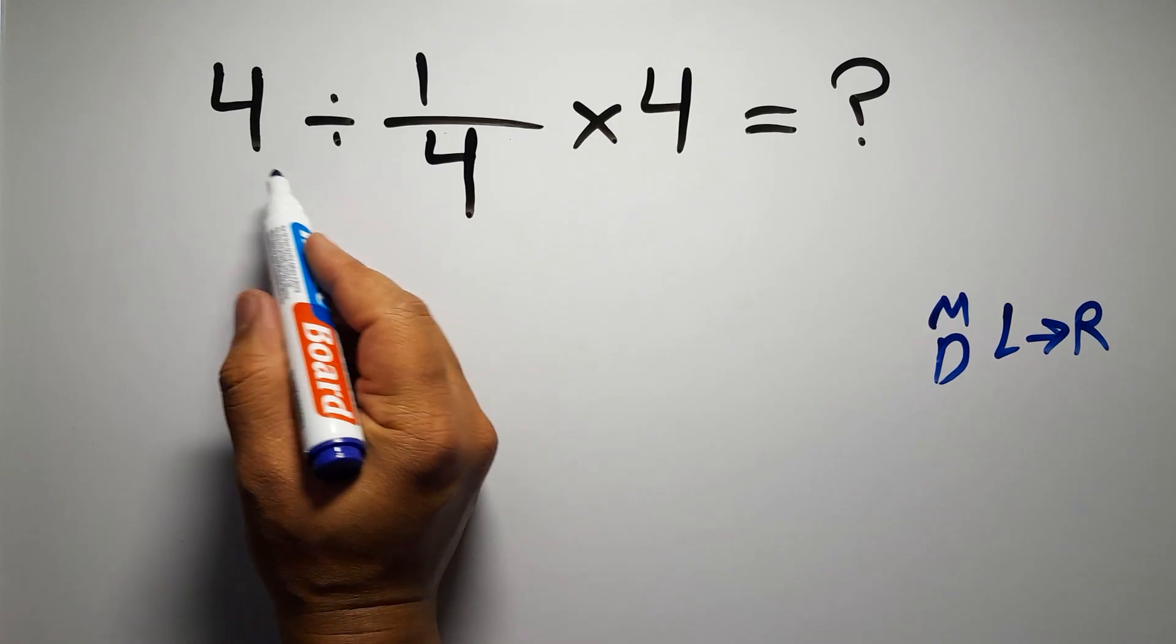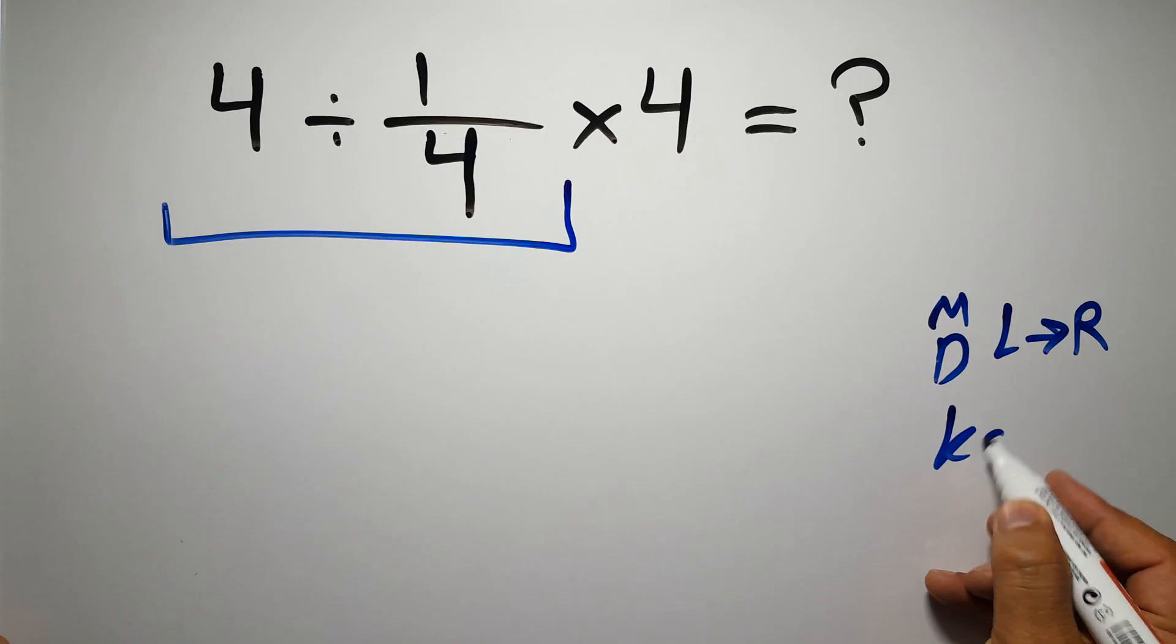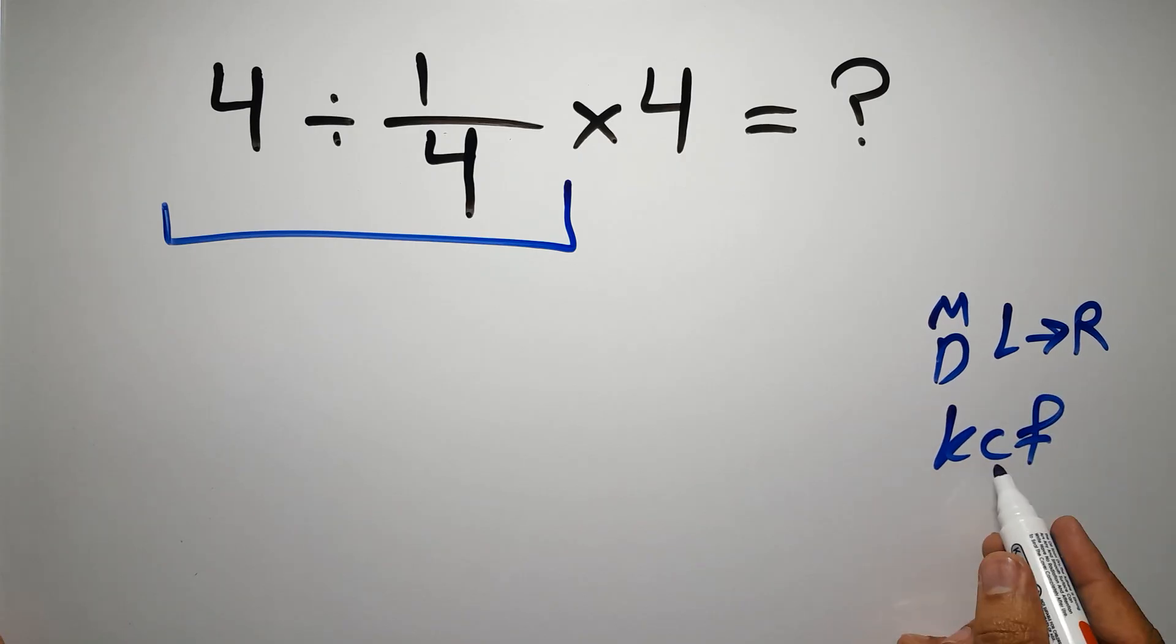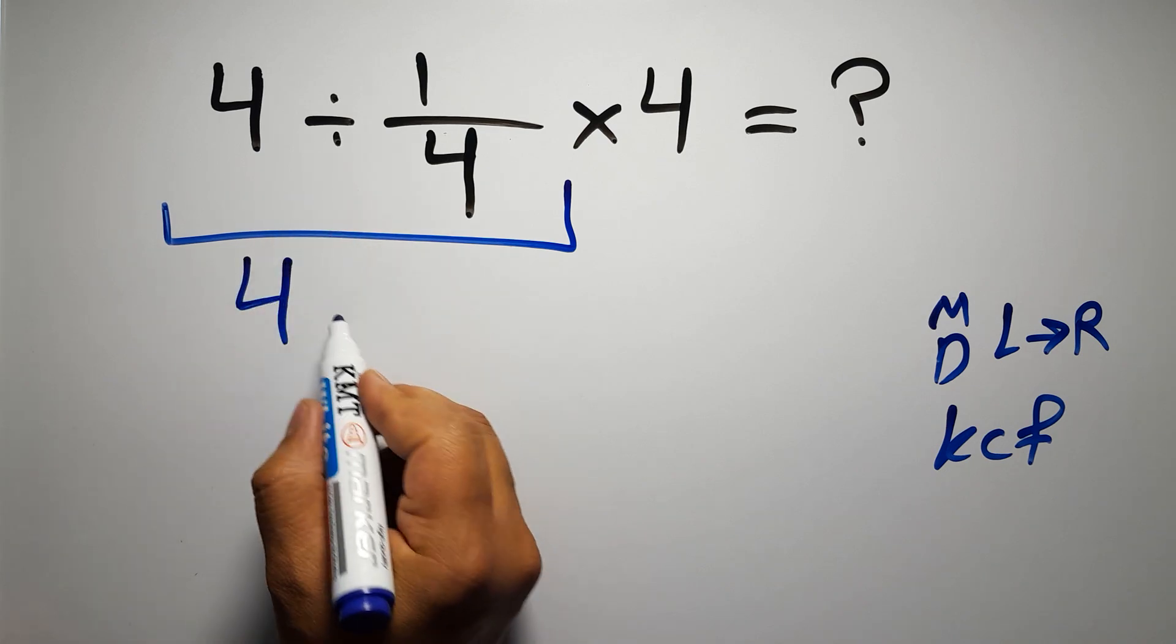So first this division: 4 divided by 1 over 4. According to the KCF rule, K stands for keep, C stands for change, and F stands for flip. We can write keep the first fraction, change the division to multiplication, and flip the second fraction.